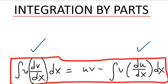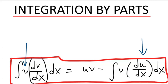Some judgment must be used in the choice of u and v when employing this method. This is particularly useful when one of the functions is an inverse trigonometric function — in that case, this function should be taken as u, so that du/dx will be a fairly simple algebraic function. Let's demonstrate this with a bunch of examples.